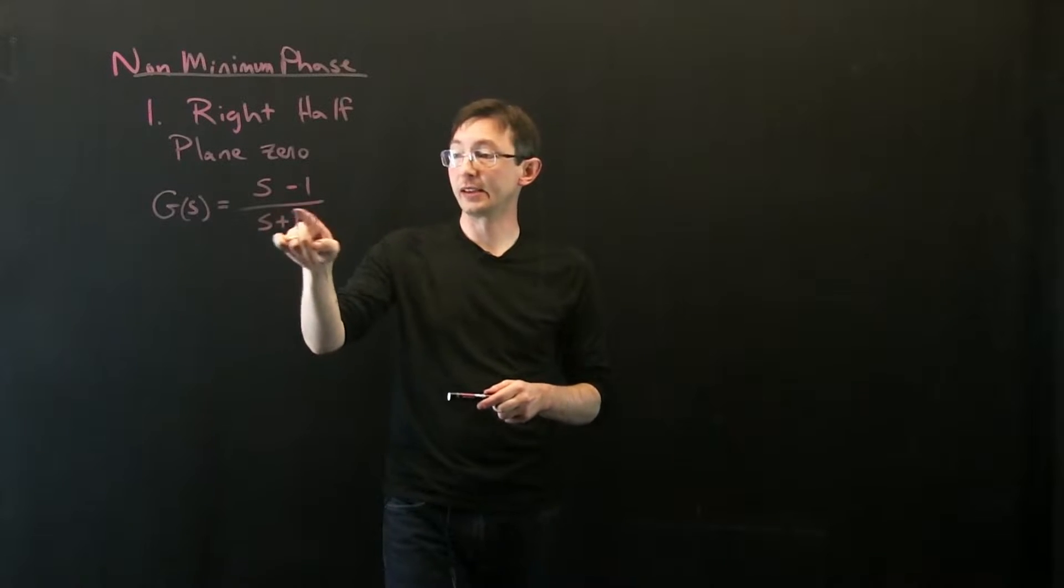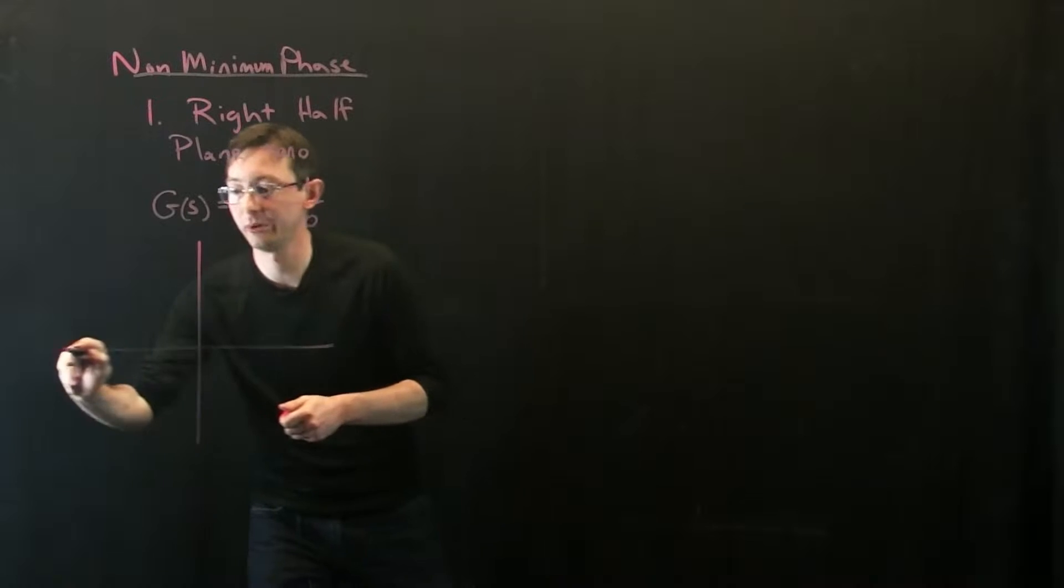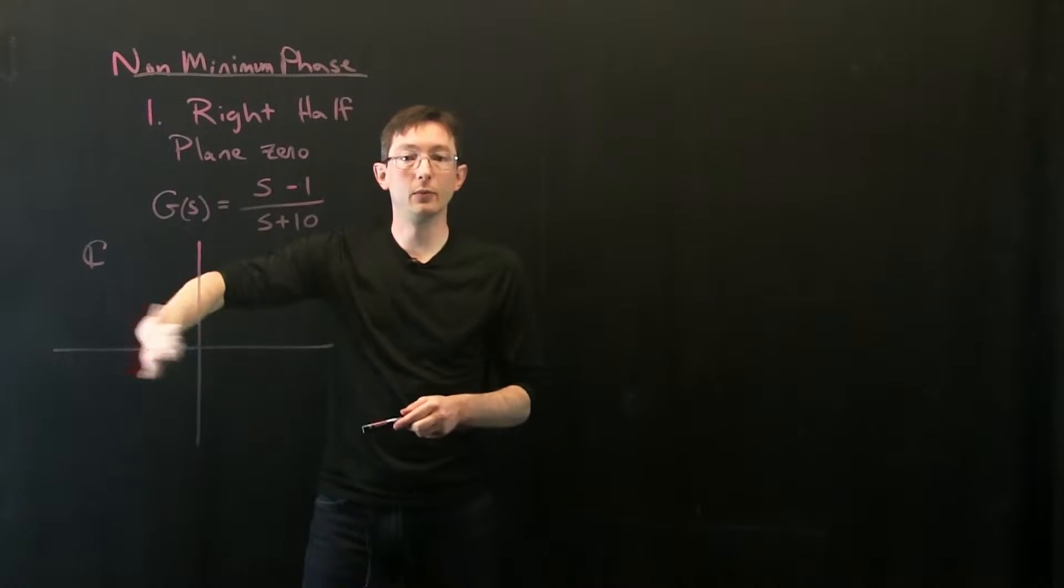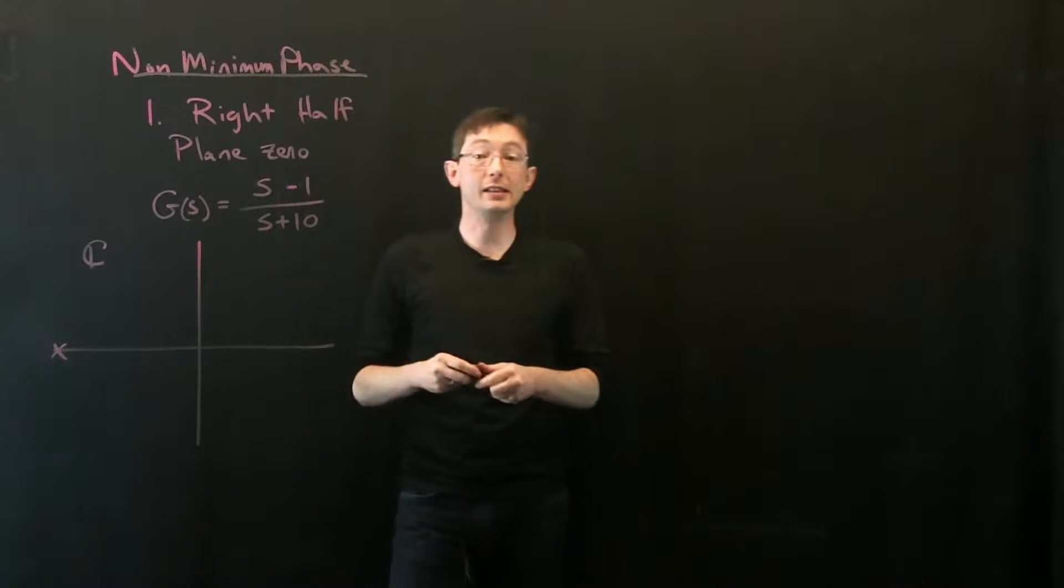Even though the system is stable because the pole is in the left half plane, let's draw this in the complex plane, so I have my complex plane, my pole is in the way left half plane at like minus 10 over here. So the system is stable.